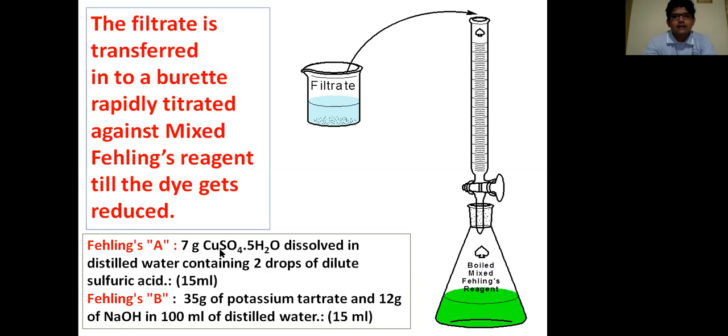Fehling A: 7g of copper sulfate pentahydrate dissolved in distilled water containing 2 drops of dilute sulfuric acid, 15 ml. Fehling B solution: 35g of potassium tartrate and 12g of NaOH in 100 ml of distilled water. This will give the Fehling B solution.